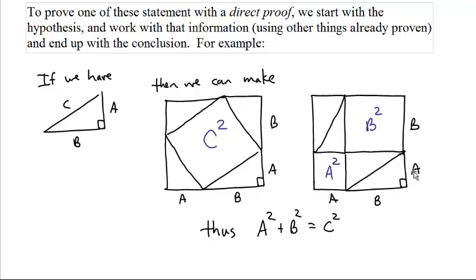This is a direct proof. We started with what we supposed, a right triangle with sides a, b, and c, and we ended up concluding that a squared plus b squared equals c squared, the conclusion.